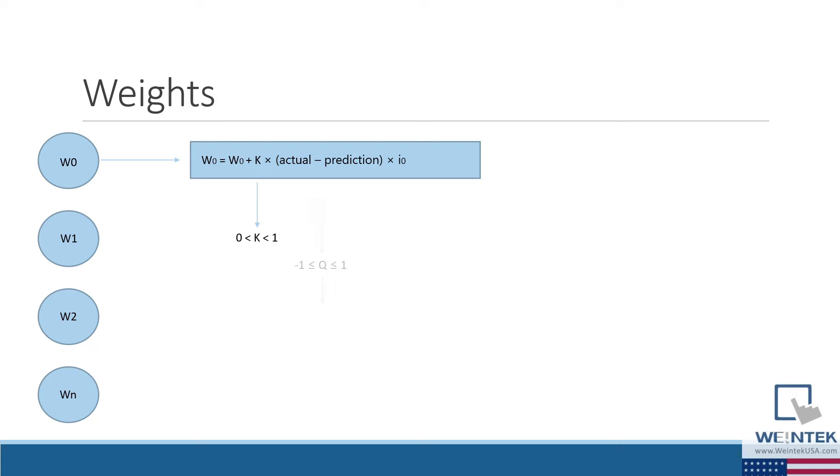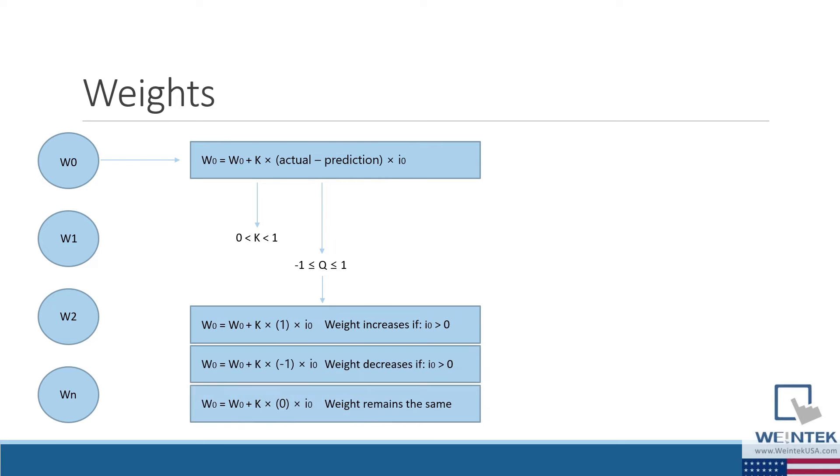Since both the output and our prediction can be either true or false, the difference between the actual output and our prediction will always be an integer between negative 1 and positive 1. This will determine if the weight will increase, decrease, or stay the same.